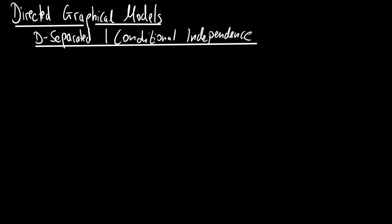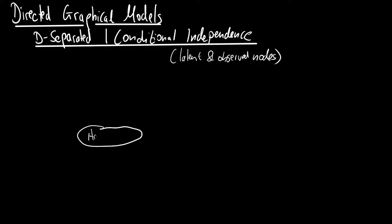We want to talk about conditional independence. This conditional independence makes only sense when we are talking about latent and observable, or observed, nodes — so make sure that you are aware what those two are. Let me start with the following directed graphical model. We are concerned with happiness, or with the mood in a particular day, and we are asking what is affecting it.